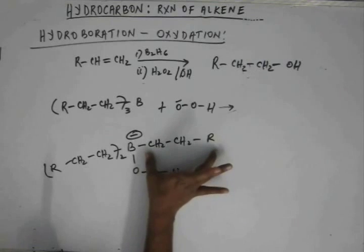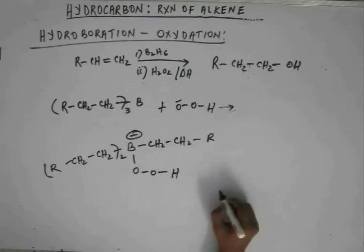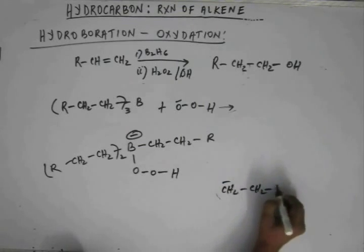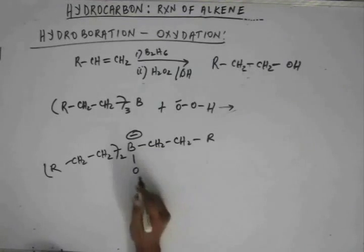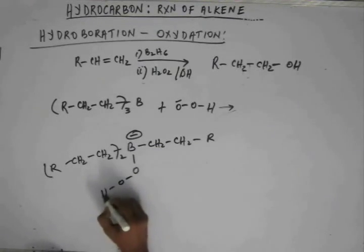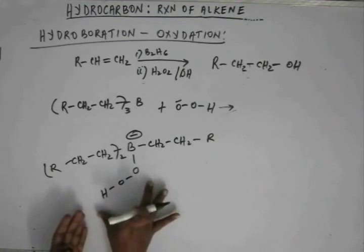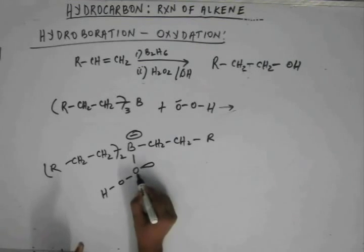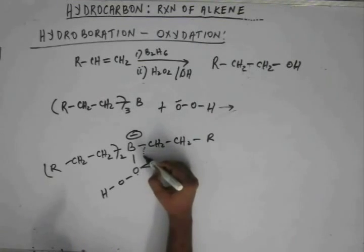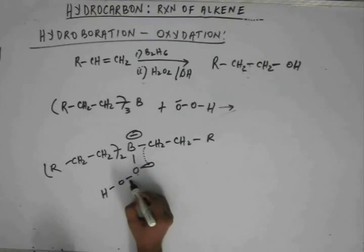This R group cannot come out as hydride. This R group cannot come out like alkyl anion carrying negative charge on carbon because this is not a stable group. Some other group can come out. This is the hydrogen peroxide part. This is the anti-bonding of this oxygen.